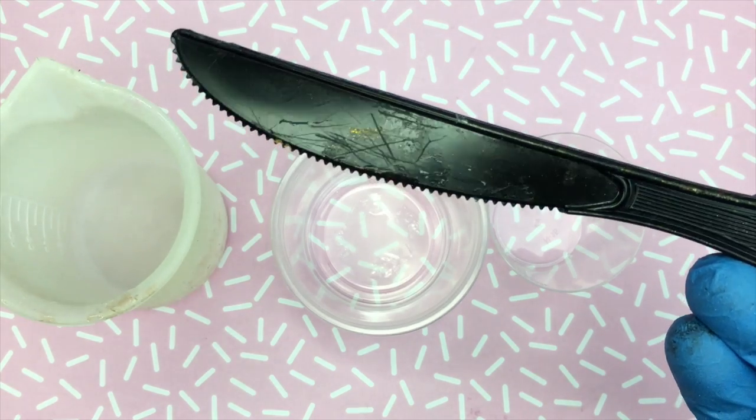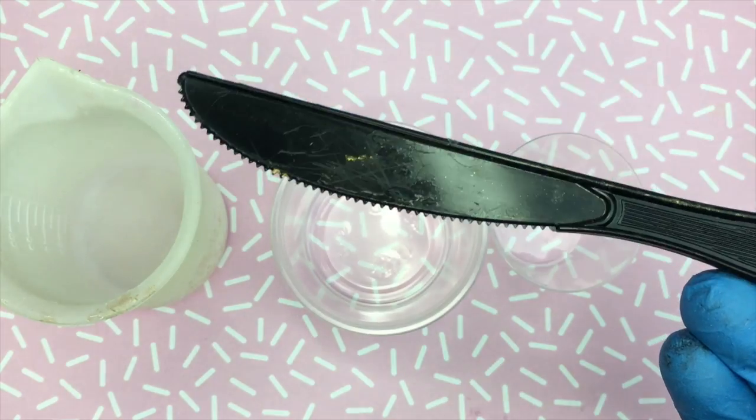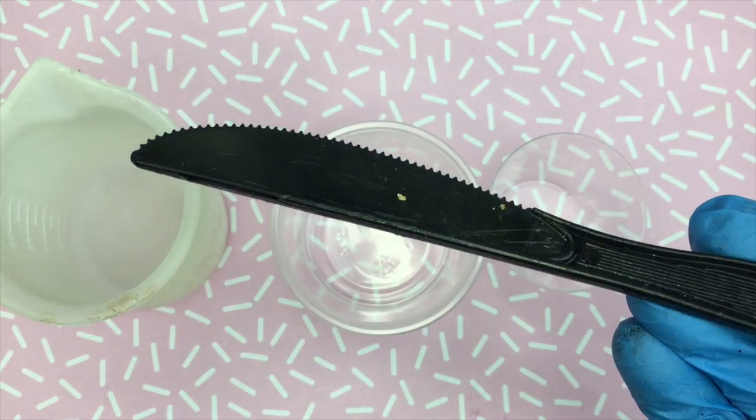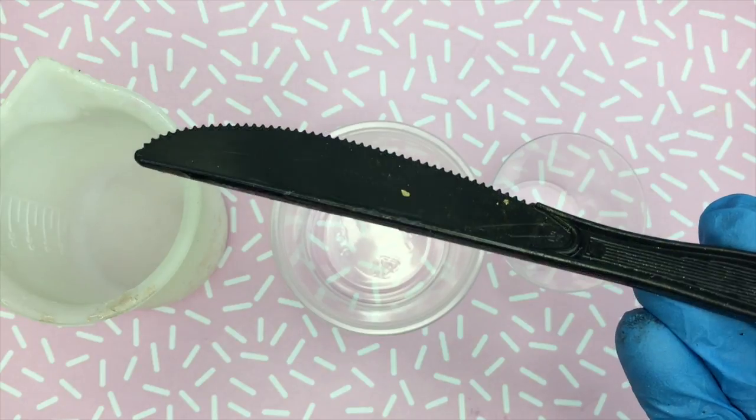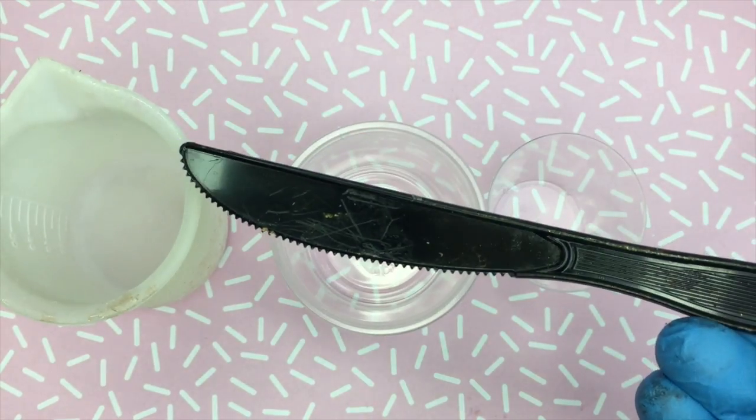To mix my resin together I like to use plastic utensils because wooden sticks usually are porous which means they can cause more micro bubbles in the resin.